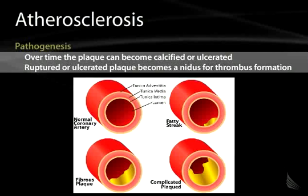Here we have pictures illustrating that the normal coronary artery, from outside to inside, consists of the tunica adventitia, media, intima, and the lumen of the vessel. A fatty streak settles inside the vessel wall. Ultimately, a fibrous plaque can form, and a complicated plaque can form as well that is capable of ulcerating, providing those constituents that are thrombogenic, and with the formation of thrombus can lead to occlusion.